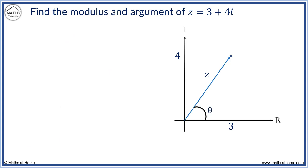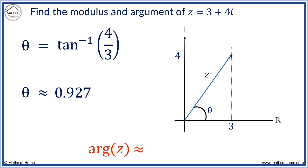The argument is the angle shown. We can form a right-angled triangle with adjacent side 3 and opposite side 4. Evaluating this, theta approximately equals 0.927. Since this is the angle from the positive real axis, this is our argument, which we can write as arg z for short.